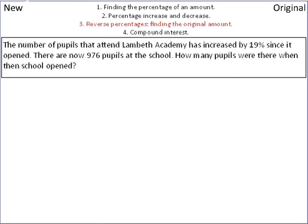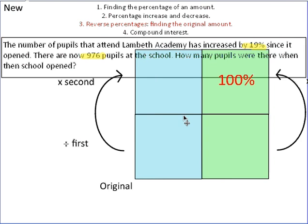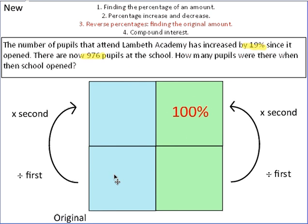Let's look at another one. So, this time, the number of pupils that attend Lambeth Academy has increased by 19%, 19 is key information. So, there are now 976 pupils. How many pupils were there when the school opened? So, again, we're looking at the original, so we're going to set up our original box. Exactly the same as before, except the arrows are going the other way. And we're going to fill in the information. So, it's increased by 19%, so we're now looking at 119% because it's increased. And there are now 976 pupils. So, after the increase, there were 976 pupils. We want to go back to work out, what was the original amount? How many were there when the school first opened?